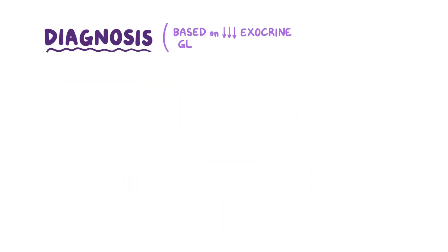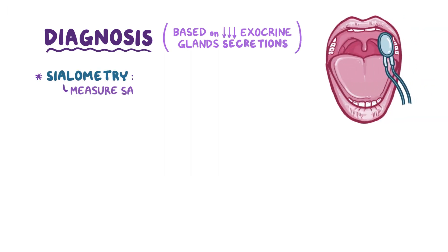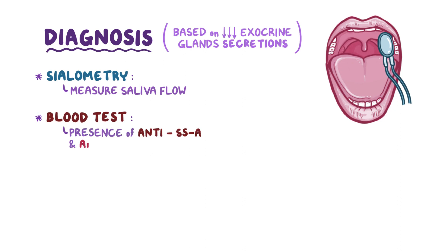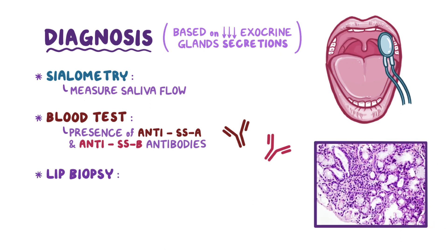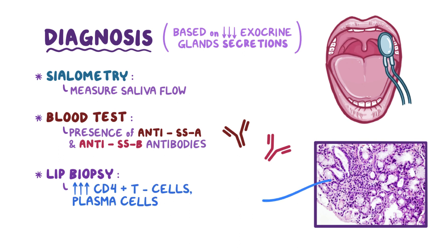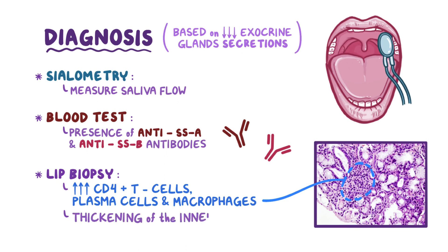Diagnosis of Sjogren's syndrome is based on a decrease in exocrine gland secretion. For example, sialometry can be done to measure the saliva flow. Blood tests often show the presence of anti-SSA and anti-SSB antibodies. A confirmatory test is a lip biopsy to examine the minor salivary glands, especially CD4-positive T cells, plasma cells, and macrophages, and thickening of the inner duct wall.